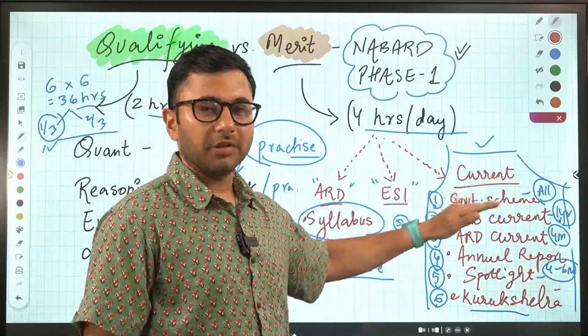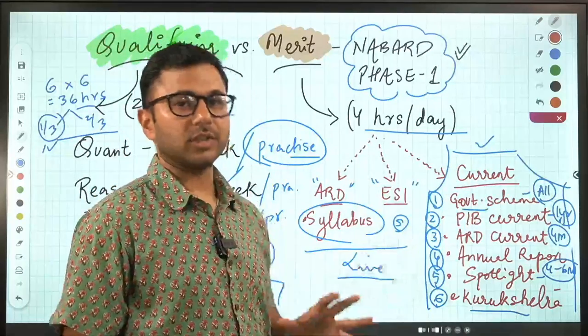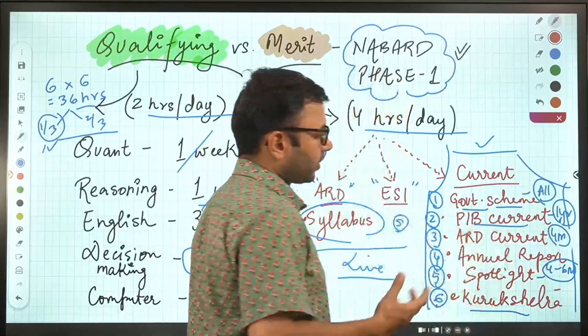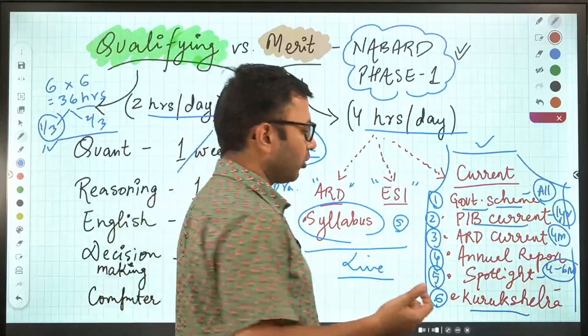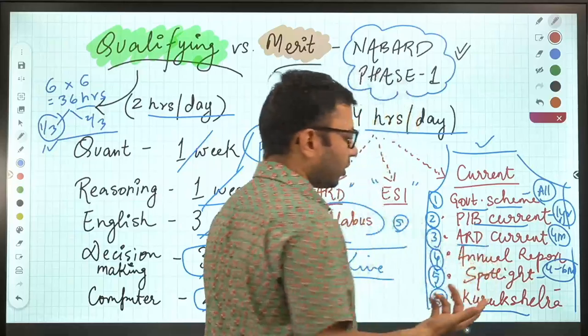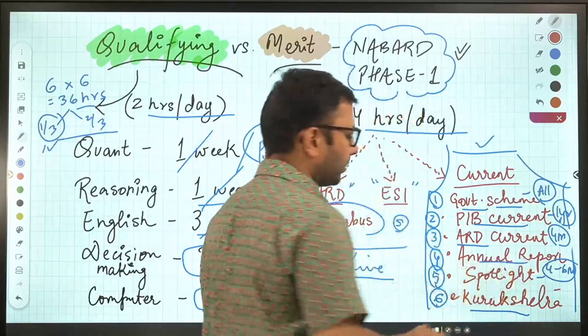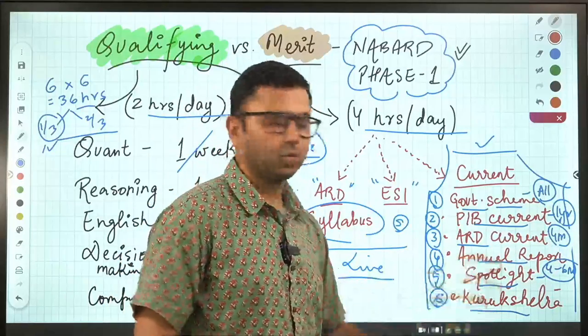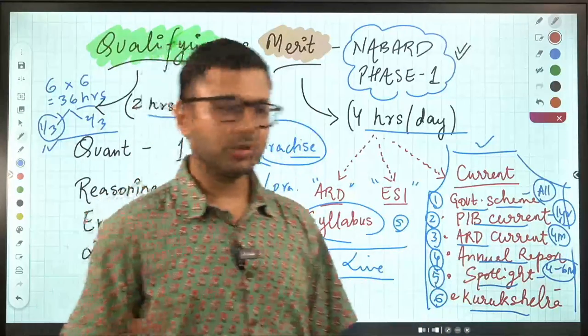So these are the six headings under which you have to cover current affairs. Remember, you can cover them one by one only. And that is the right approach. You spend about one week on government schemes. About three to four days on PIB current of six months. About one day on ARD current. Annual reports about a week. Spotlight four to six months about a week. And Kurukshetra mein ek-do din mein dekhega. Not more than that.